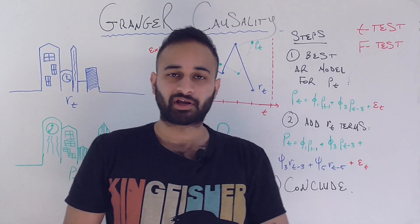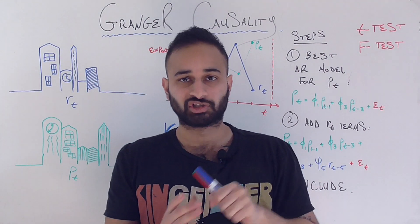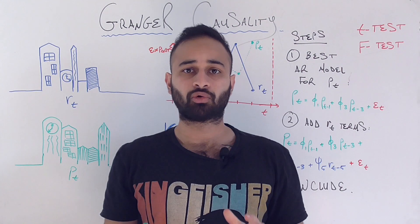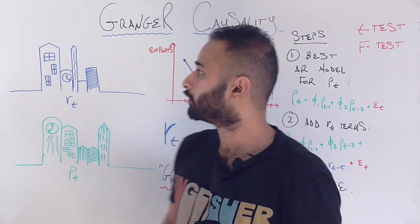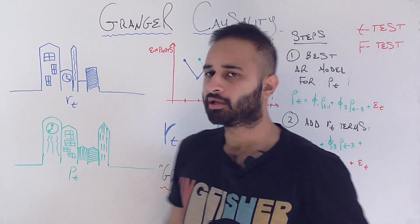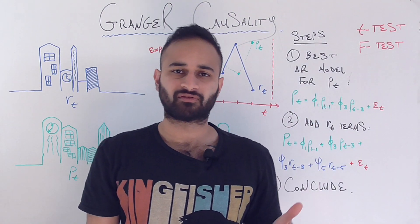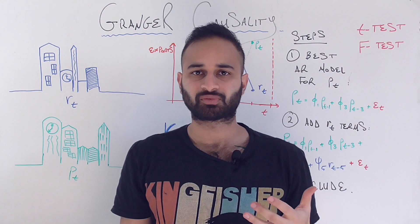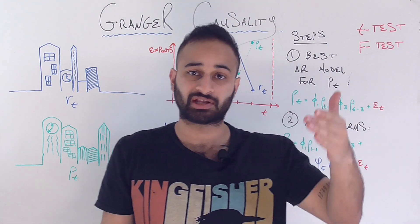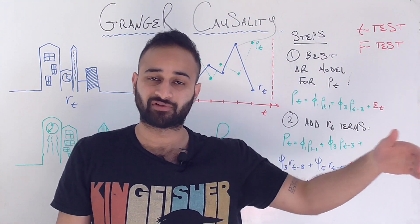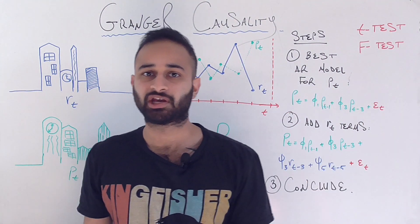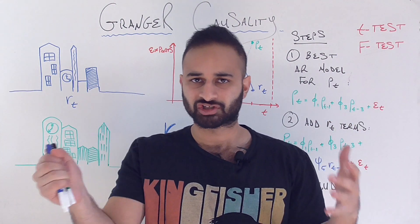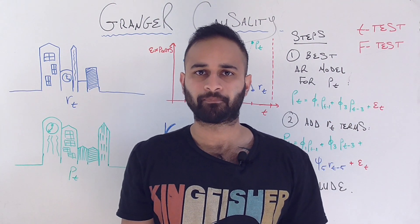Hi everyone, welcome back. We're going to continue our discussion on time series with a really cool concept today called Granger Causality. As we saw in the vector autoregression videos, sometimes we don't care just about one time series and lagged versions of itself. We care about multiple time series and about the interactions between them.